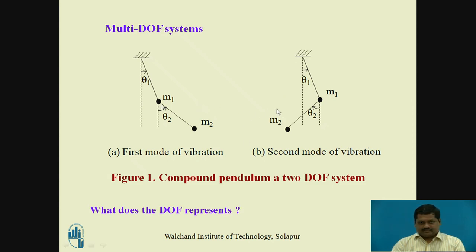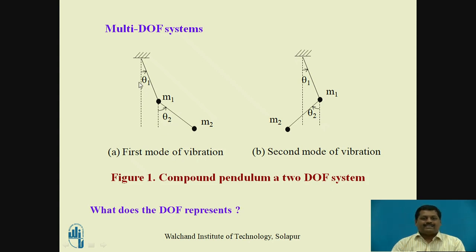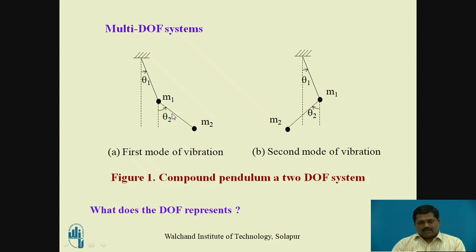The next two examples show a compound pendulum as a multi-degree of freedom system. Mass m1 and mass m2 have two degrees of freedom: theta1 and theta2. Theta1 is the degree of freedom for mass 1 and theta2 for mass 2. There are two diagrams: in diagram A, both masses are on the right-hand side of the neutral position; in diagram B, one mass is to the right and the second to the left. So there are two masses and two modes of vibration — first mode and second mode of vibration.